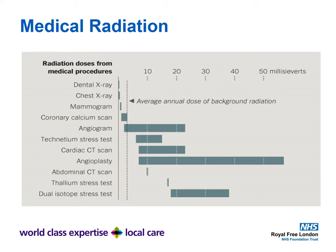To give a comparative view, this slide shows radiation doses from various medical procedures. The dotted line shows average annual background radiation. A dental X-ray, chest X-ray, and mammogram are relatively small doses. An angiogram is much larger, and angioplasty has quite an extensive range — around 10 to 60 millisieverts — because procedure duration varies significantly. A dual isotope stress test or myocardial perfusion scan carries a fairly static range between 20 and 40 millisieverts.